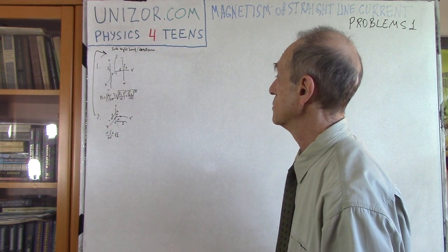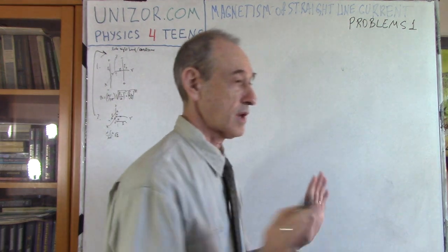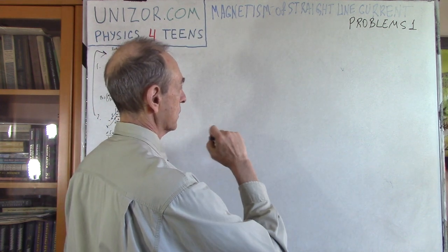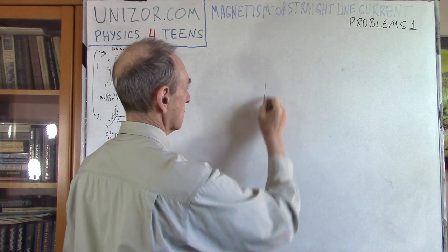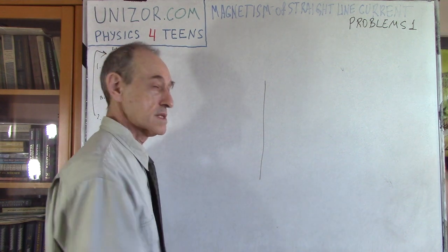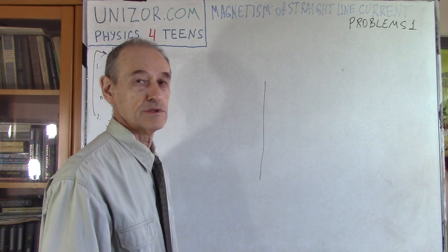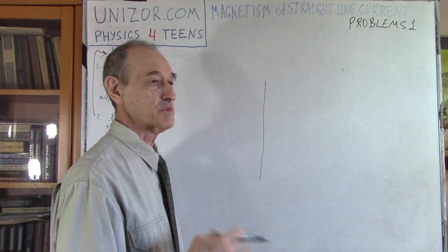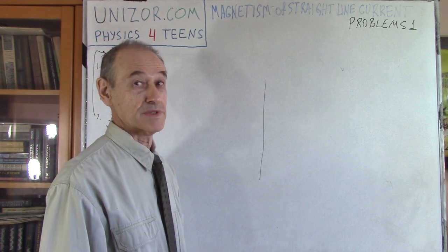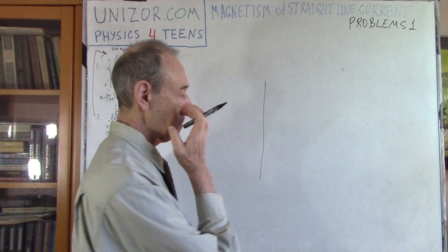Okay, so two problems. But first, let me very briefly repeat what we talked about last lecture. If you have a straight line with electric current, and the line is relatively long — from the physical perspective it's long, from the mathematical perspective it's infinitely long and thin — so it's a thin wire.